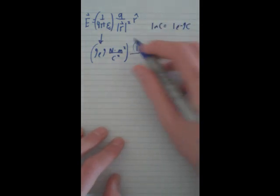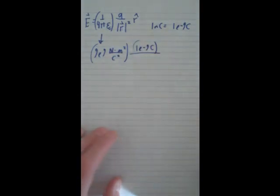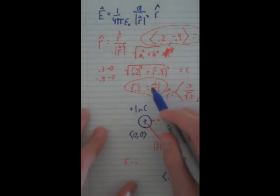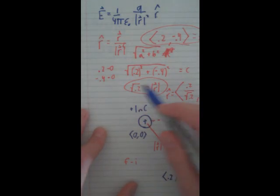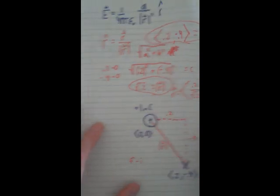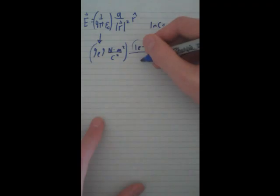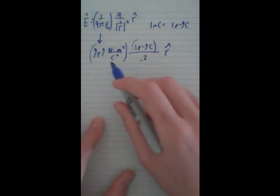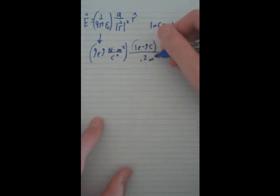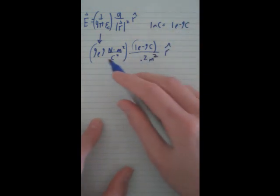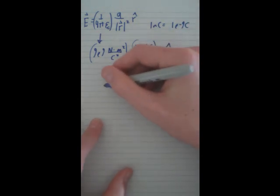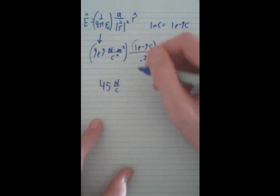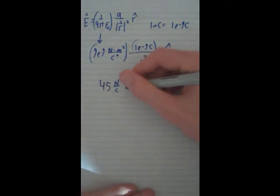Our distance, our magnitude of distance, we already found right here. We just have to square this. So the square of square root of 0.2 is just going to be 0.2. So this will just be 0.2 meters squared. When you multiply this all out, this will end up equaling 45 newtons per coulomb times r̂.